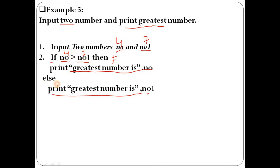If you write No as 7 and No1 as 4, then the condition is true and that statement executes. This is the process. I hope students you have got it very clearly. Thank you for watching.